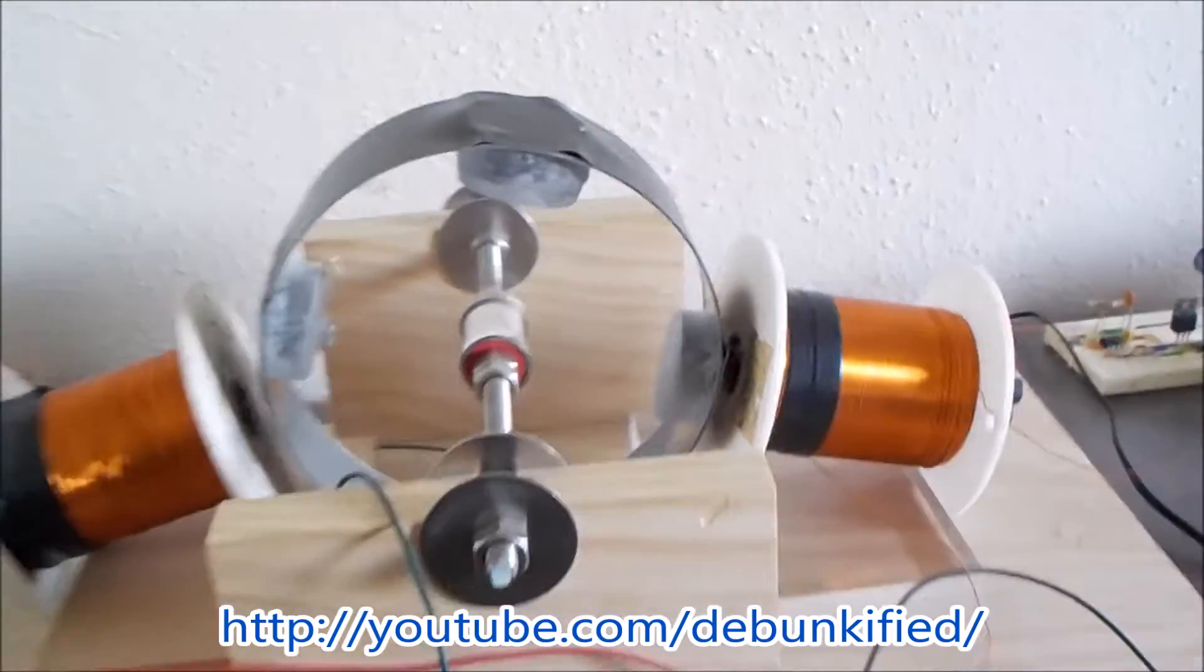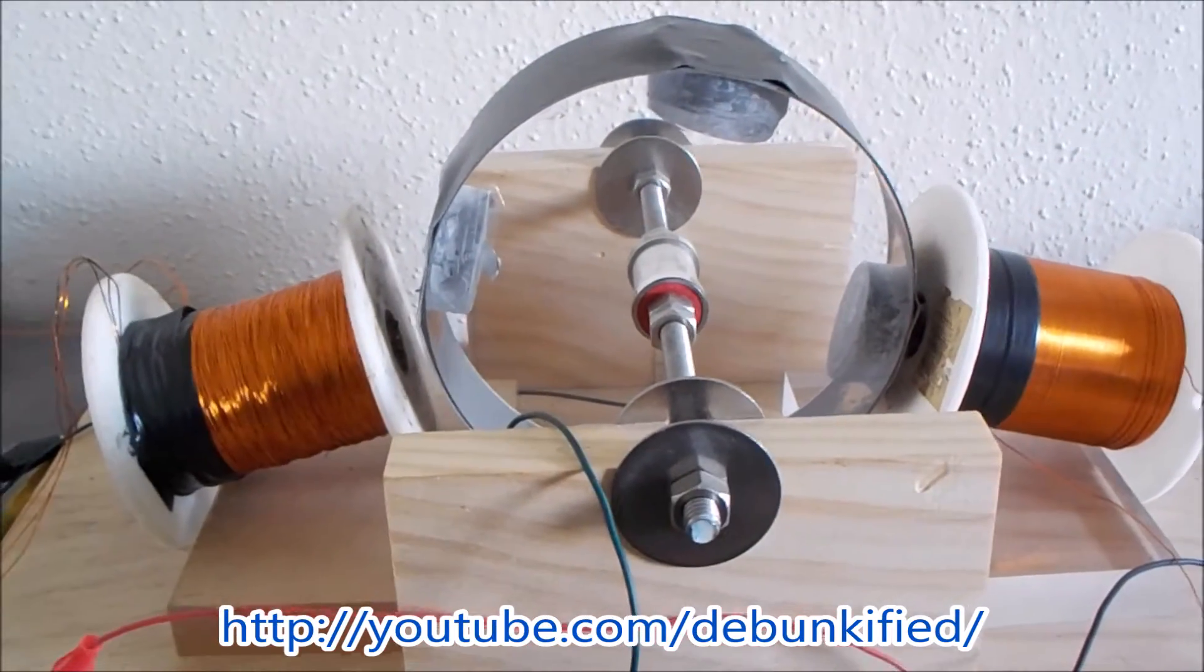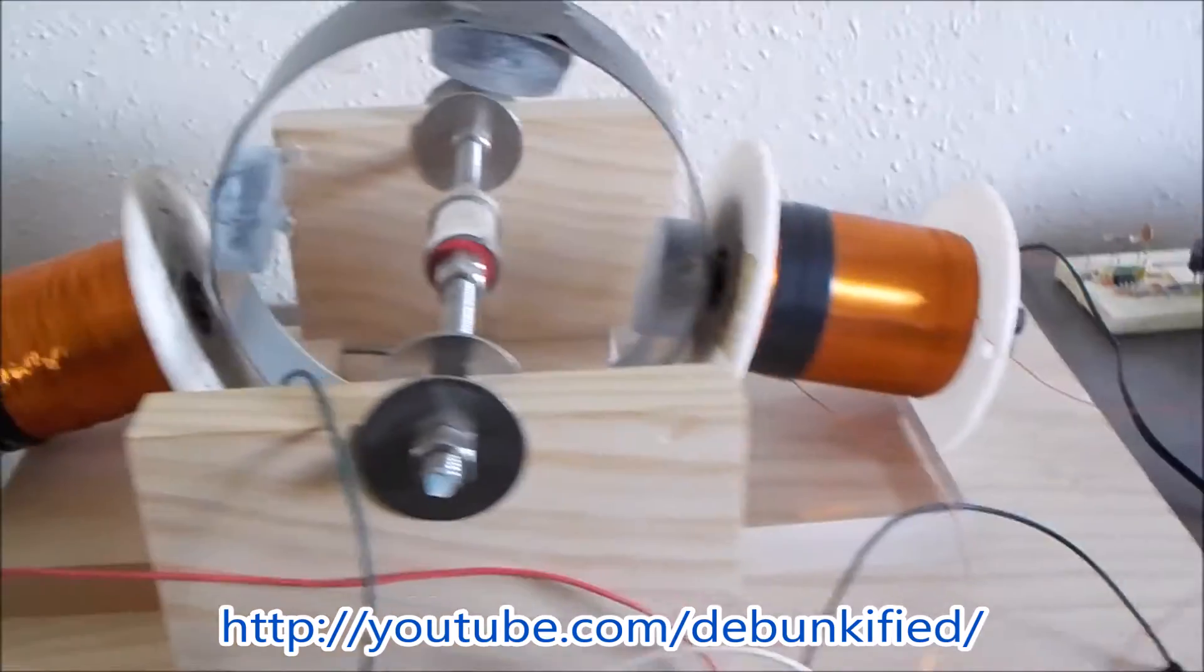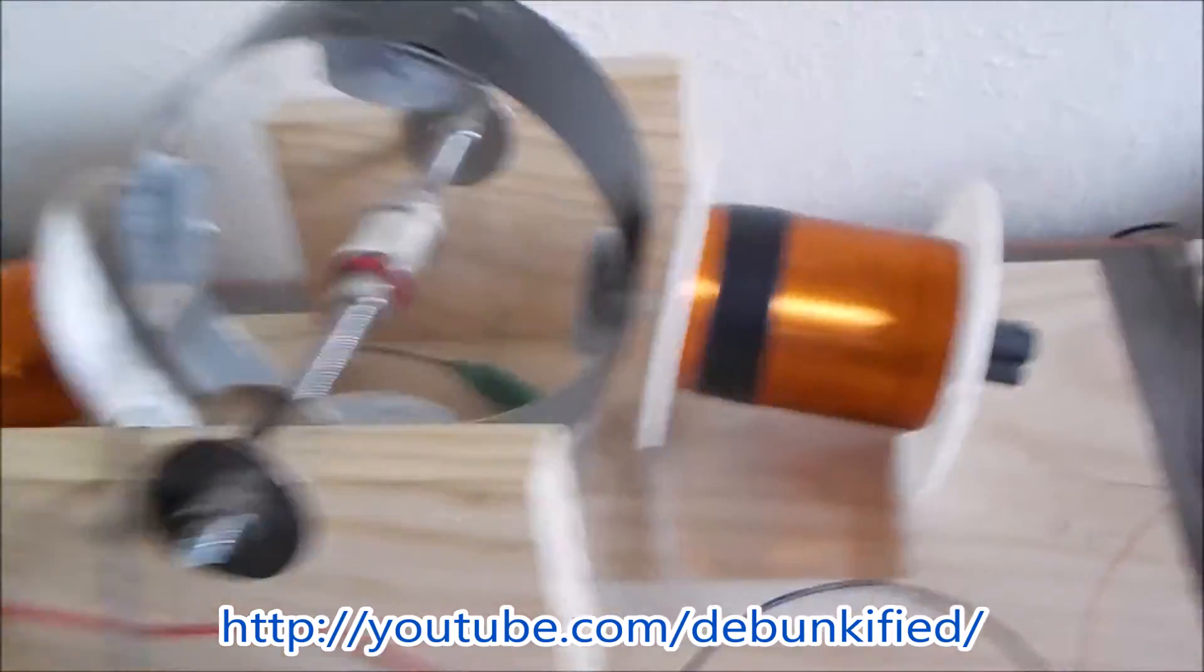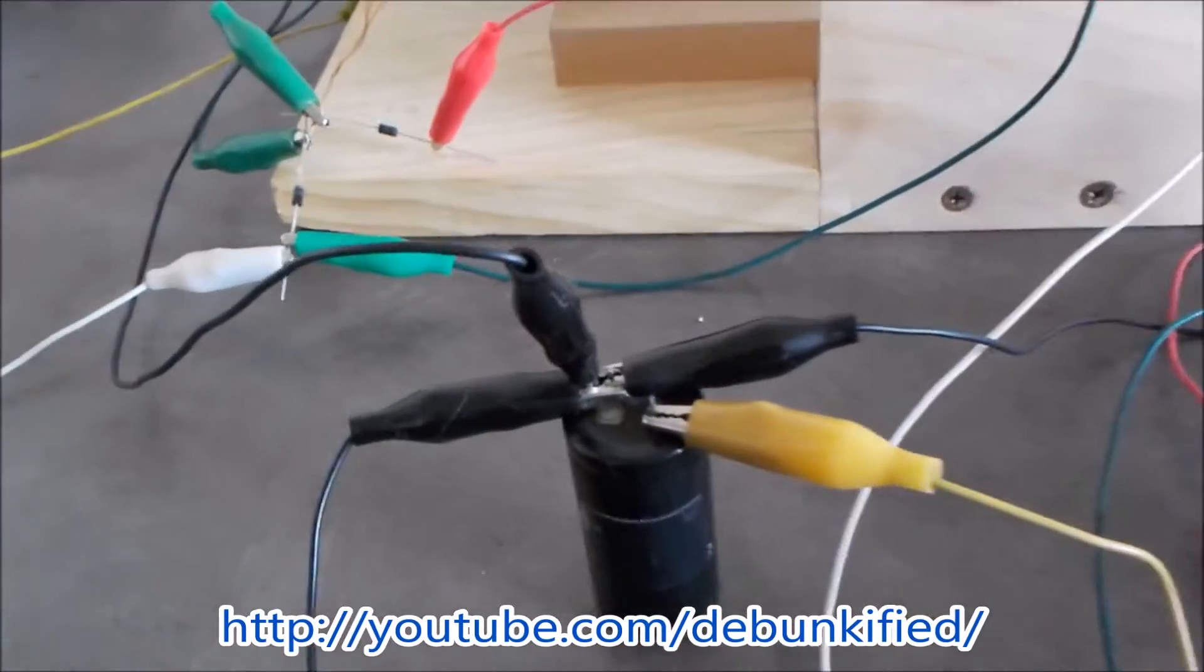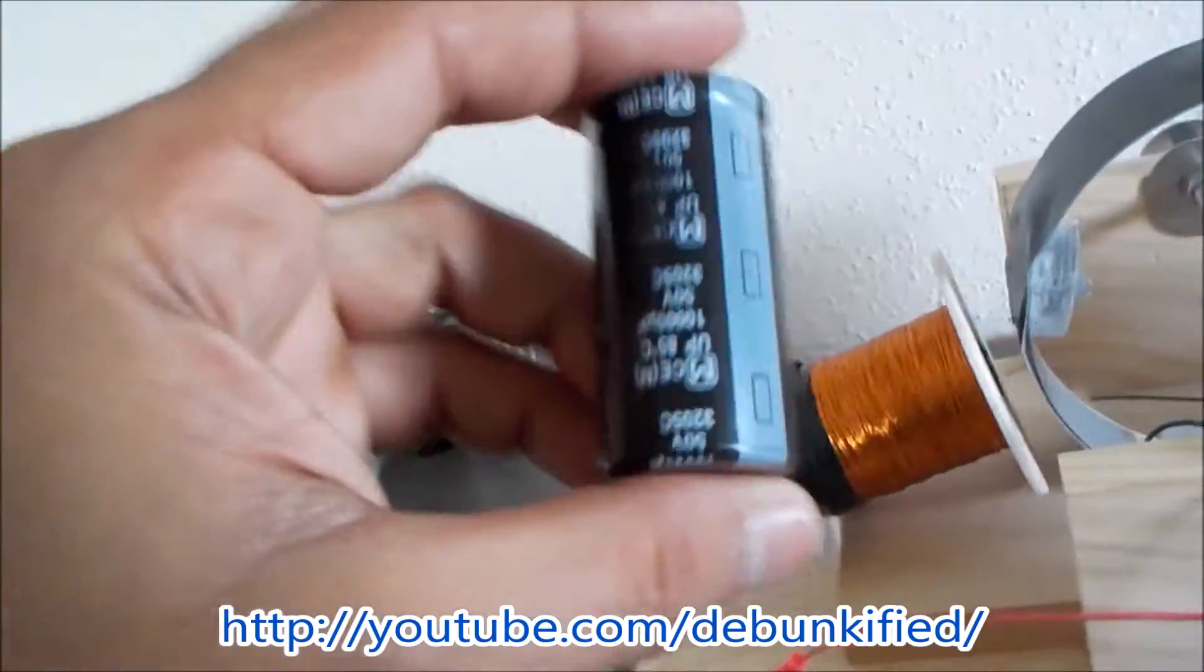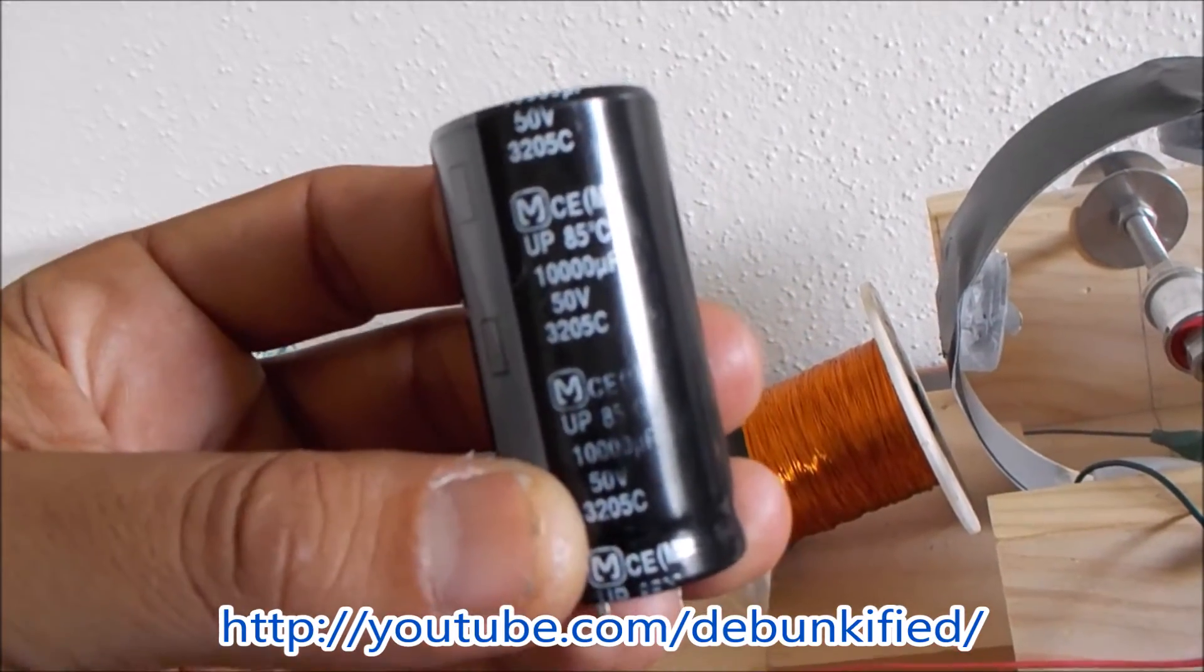So I blew my reed switch, so I thought I would put together this little video explaining, in the meantime, while I wait. I've got to order more reed switches, I've got to find the specs for it, order it, and then wait for them. But in the meantime, I would like to explain why we need a capacitor to accept our shorted coil power.